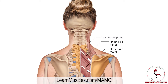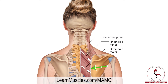More specifically, the distal attachment of the rhomboid minor is on to the medial border of the scapula at the root of the spine of the scapula. And the distal attachment of the rhomboid major is on to the medial border of the scapula starting inferior to the root of the spine of the scapula and running down to the inferior angle of the scapula.